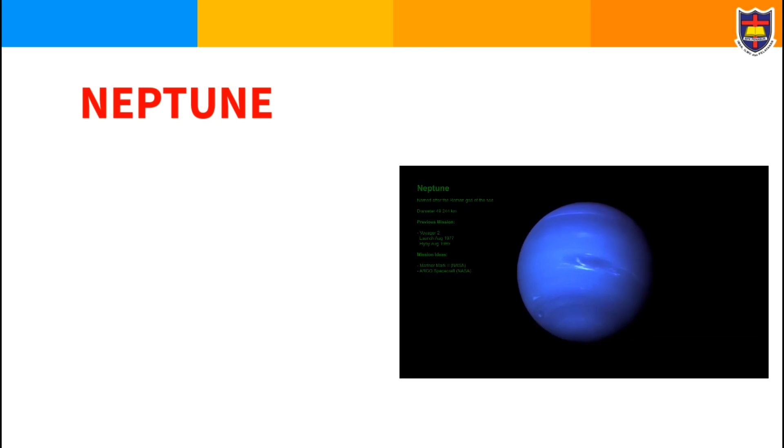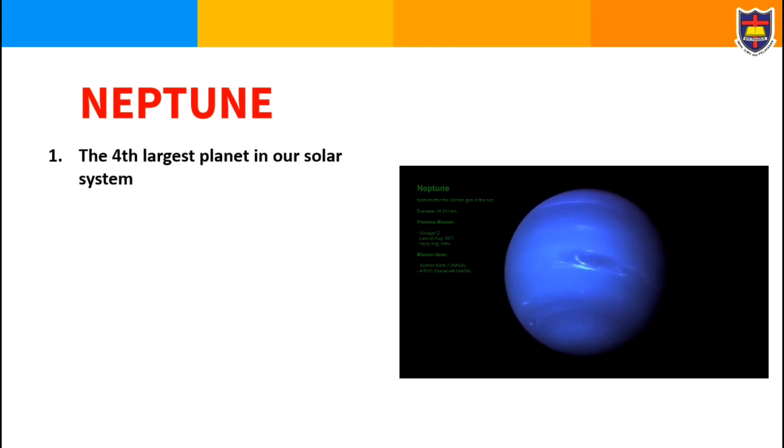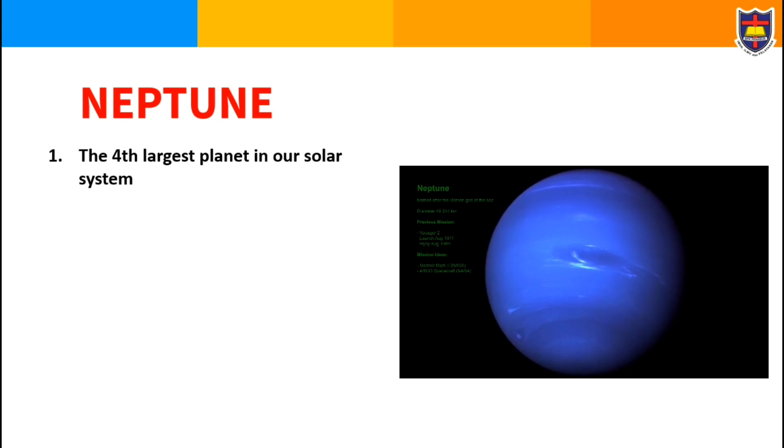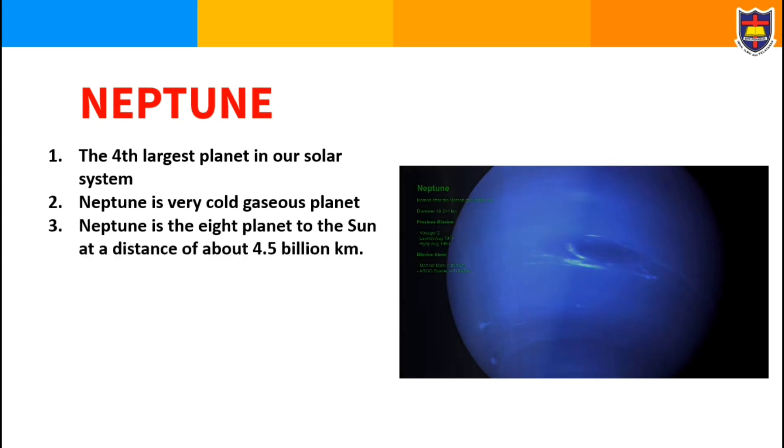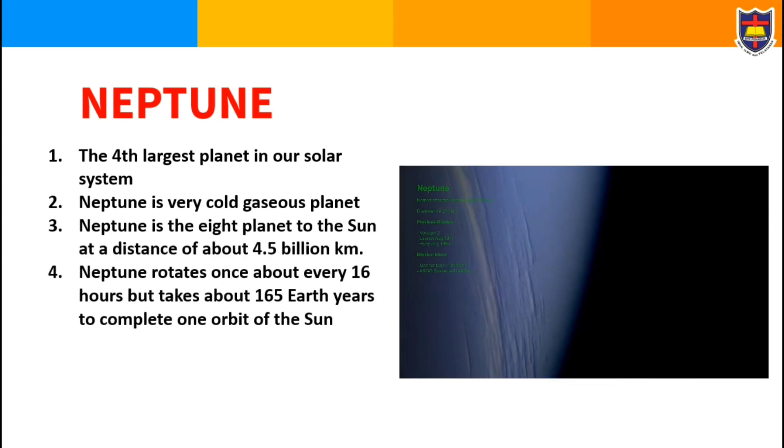Okay, this is the last planet in our solar system: Neptune, the fourth largest planet in our solar system. Neptune is a very cold gaseous planet. Its distance to the Sun is about 4.5 billion kilometers.